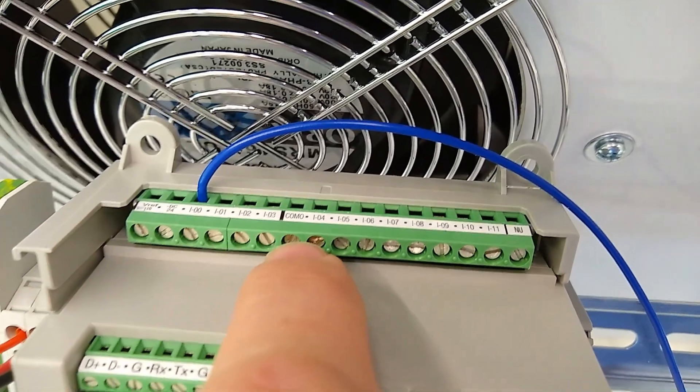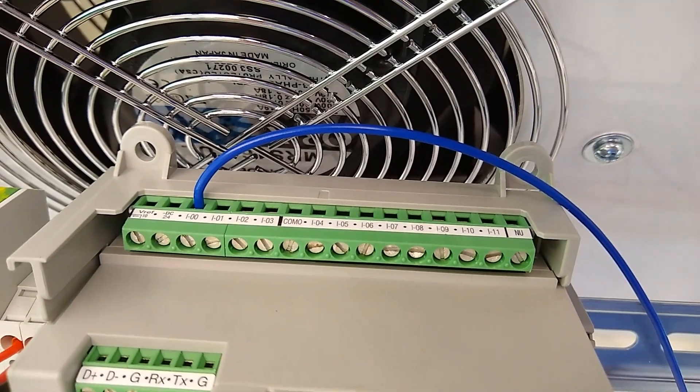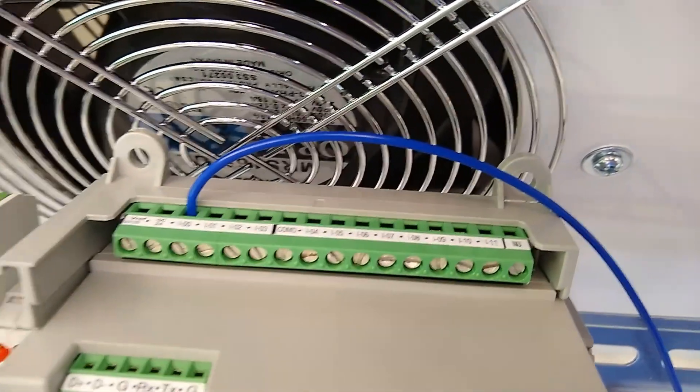Now while these are discrete inputs, input zero through three actually also are zero to 10 volt analog inputs. Also note that there is no other wiring that has to go to the top of this. The analog is internally common.